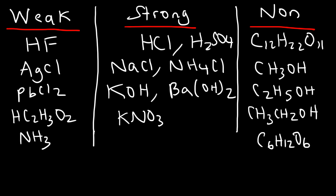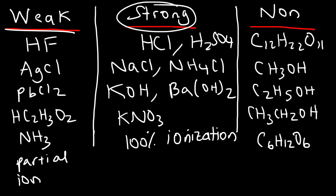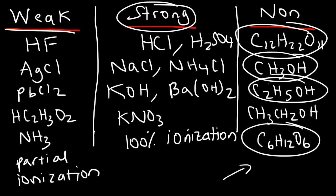To summarize: strong electrolytes ionize very well — nearly 100% ionization — and include strong acids, strong bases, and soluble ionic compounds. Weak electrolytes conduct electricity partially with about 5% ionization or less, and include weak acids, weak bases, and insoluble ionic compounds. Non-electrolytes don't ionize at all; in general chemistry the most common examples are sugars like glucose and sucrose, and alcohols like methanol, ethanol, and propanol.